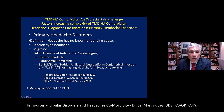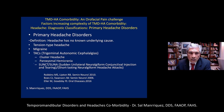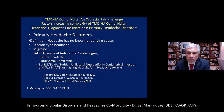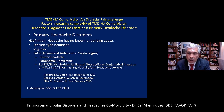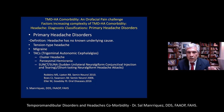The TACs — trigeminal autonomic cephalalgias — have three major classifications: cluster headache, paroxysmal hemicrania, and SUNCT/SUNA, which are two versions of the same type. Even within migraine, there are many variants: migraine with aura, migraine without aura, and many others. These classifications are fluid and designed to help you understand your patient, but your patient may fall somewhere in between or may have more than one headache disorder.